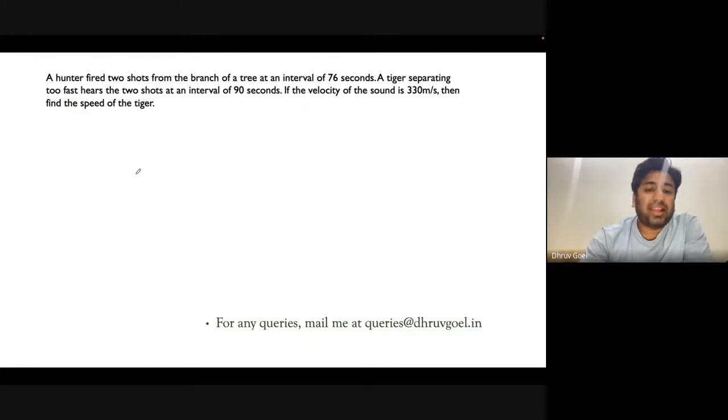Let's try to understand this question. There is one hunter and one tiger. The hunter fires two shots at an interval of 76 seconds. If the tiger was stationary, it would hear these shots 76 seconds apart. But the tiger hears them 90 seconds apart. Why? Because the tiger is running away.